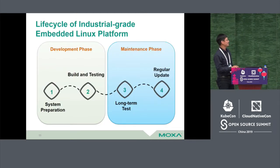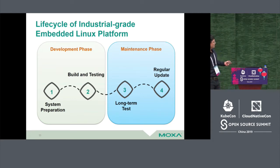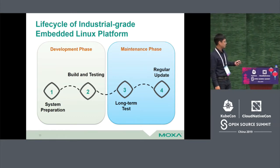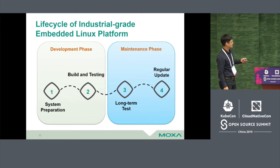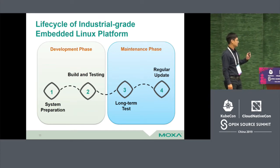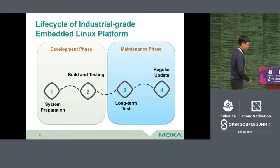This is the life cycle of an industrial embedded Linux platform. We have a development phase and a maintenance phase. In the development phase we have system preparation, building, and testing. In the maintenance phase we have long-term testing and regular updates. The life cycle of an industrial platform is usually more than 10 years, so we need to take care of the maintenance phase very carefully.